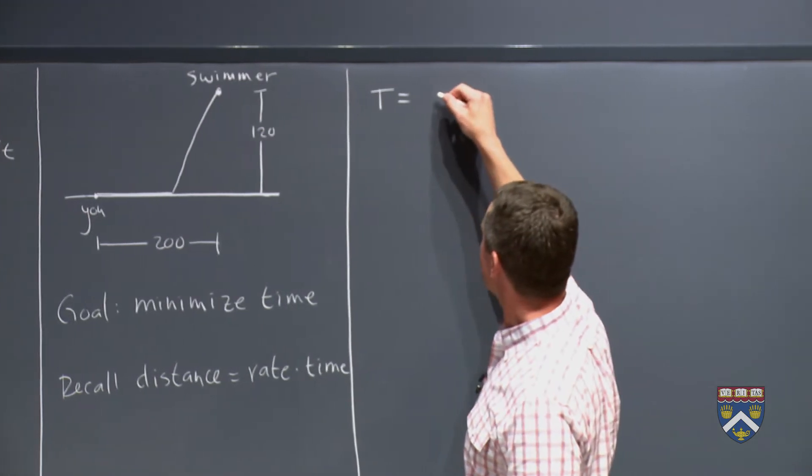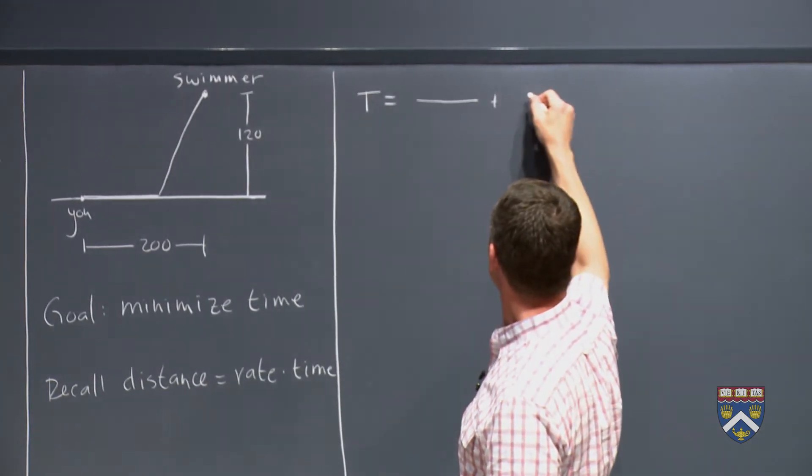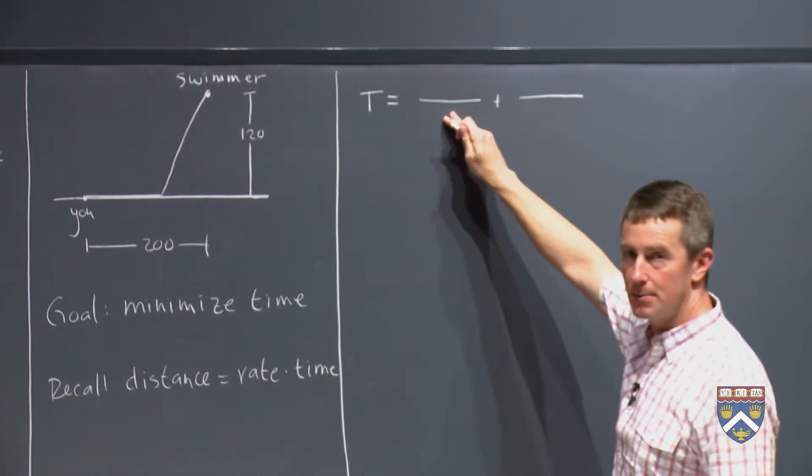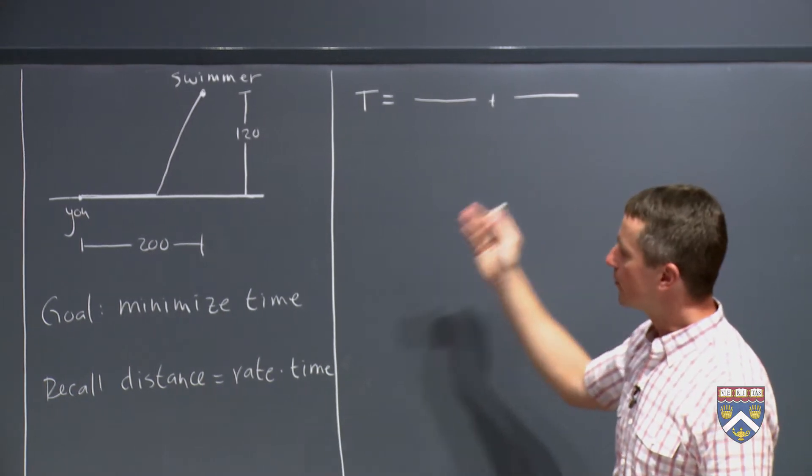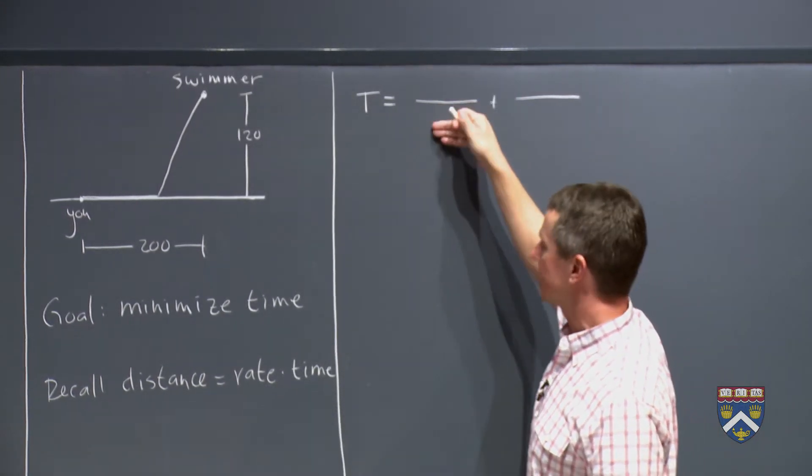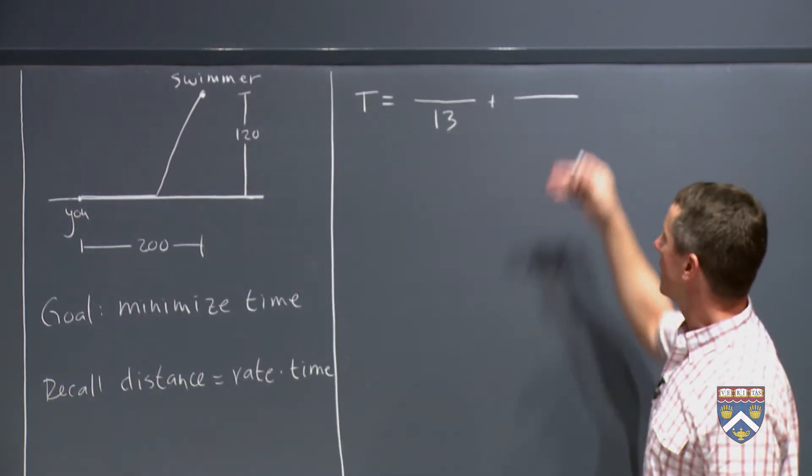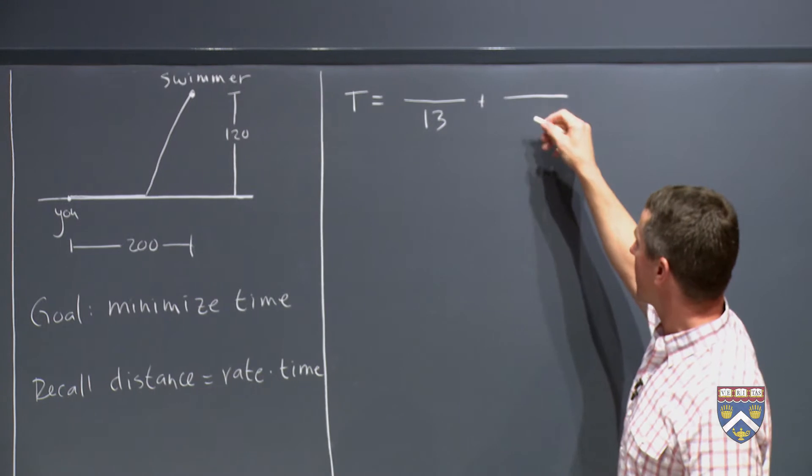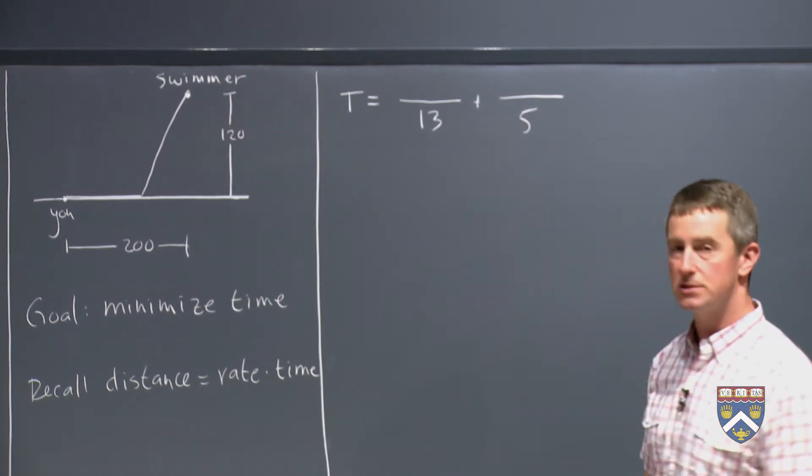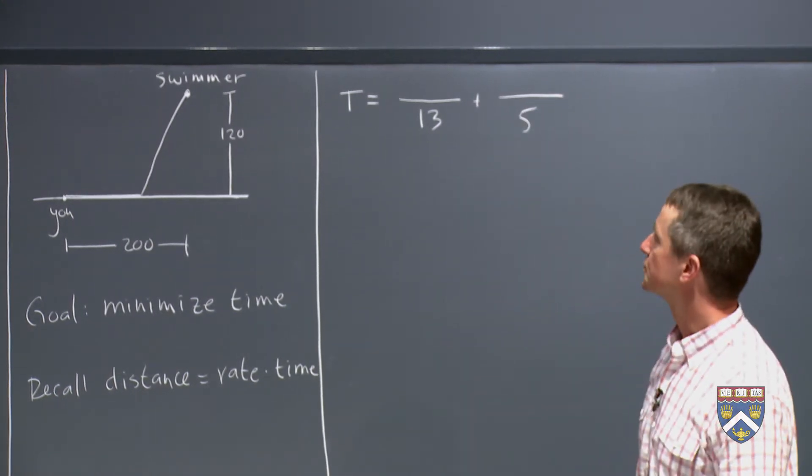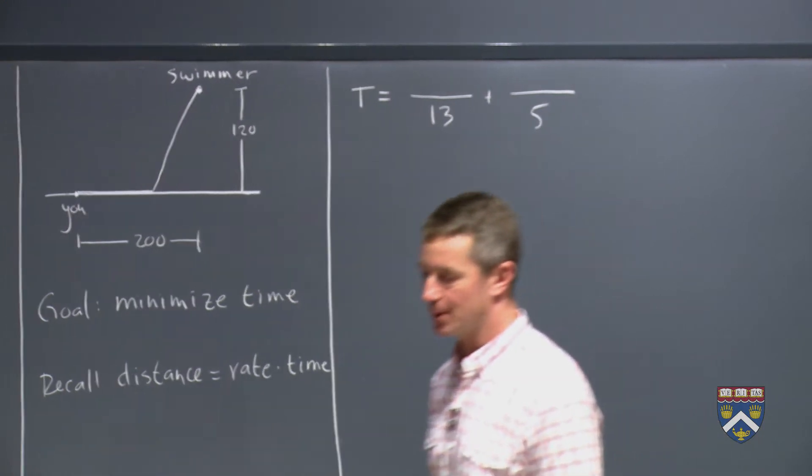So the total time is going to be the running time plus the swimming time. The running time is the running distance over the running rate, 13 feet per second. And the swimming time is the distance in the water over the swimming rate, which is 5 feet per second. So that's what we're trying to optimize here.